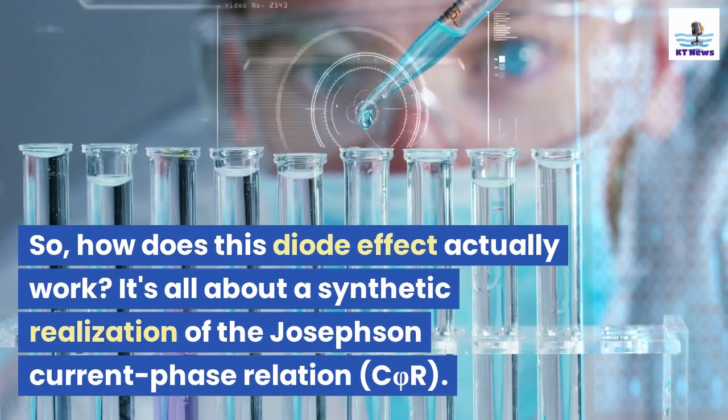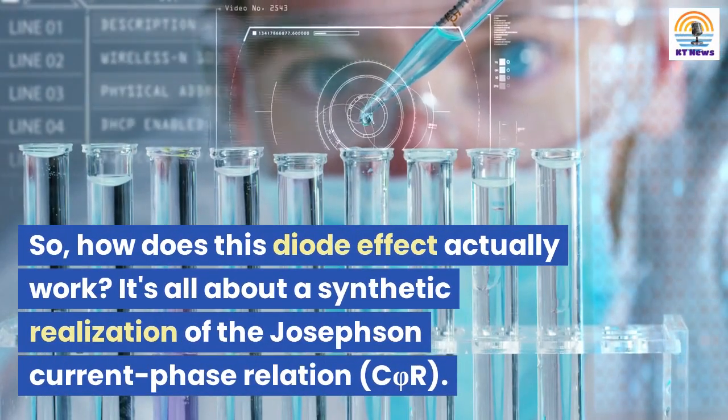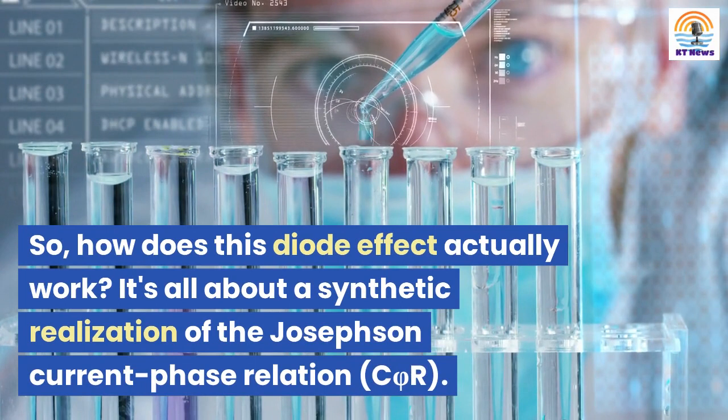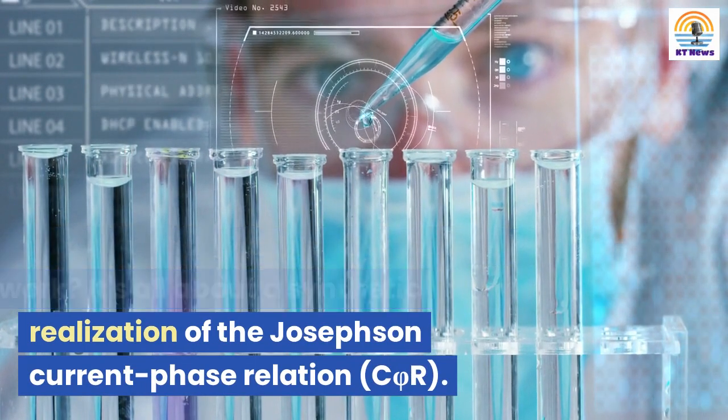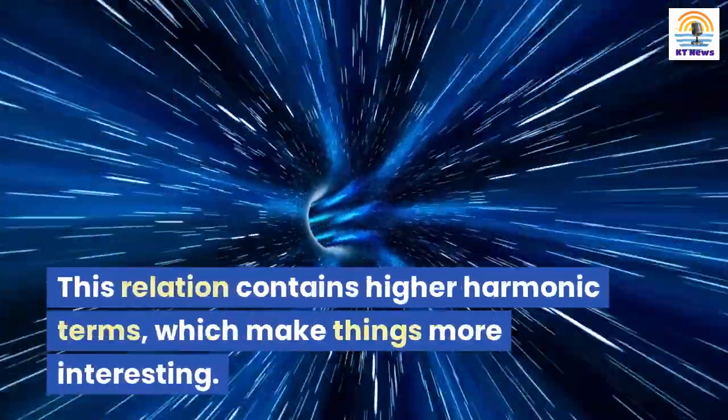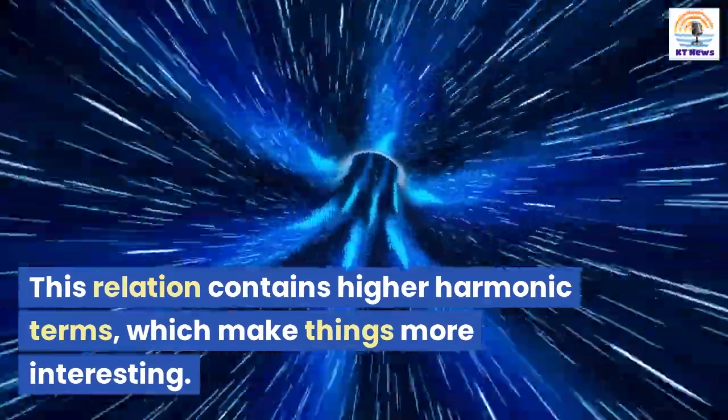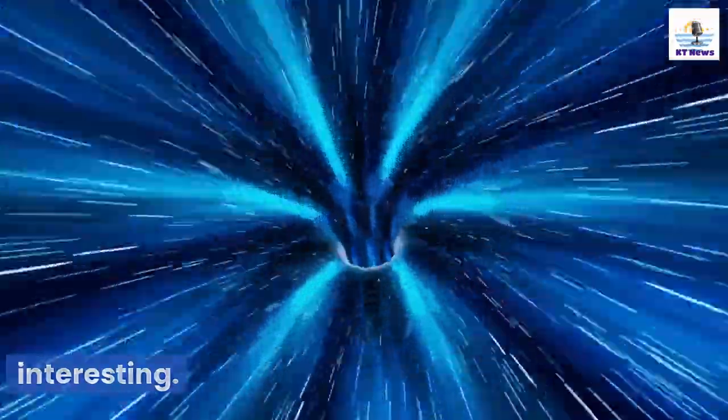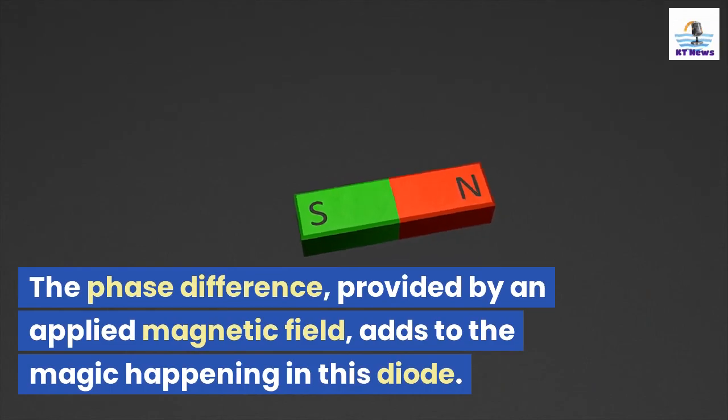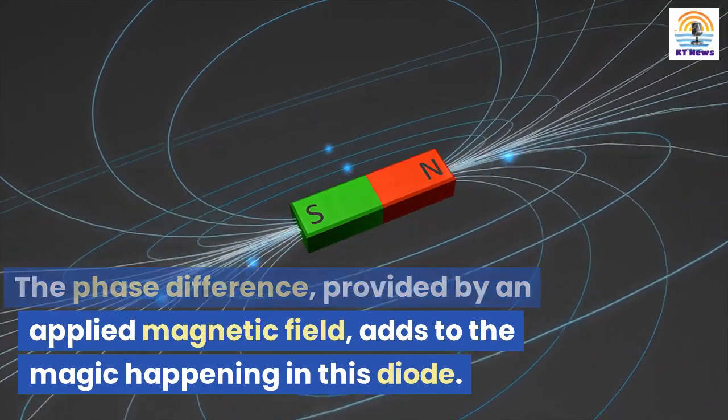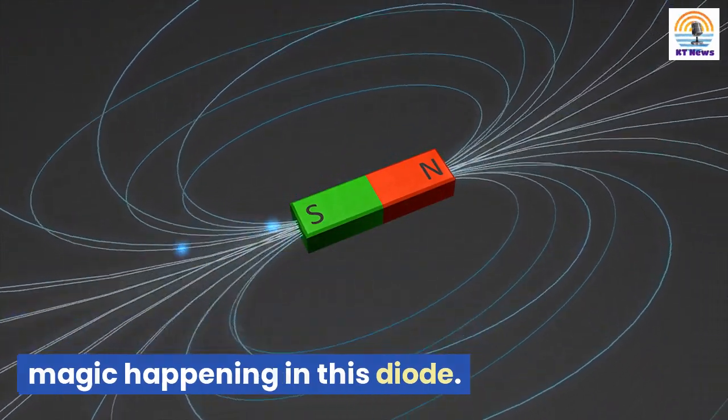So, how does this diode effect actually work? It's all about a synthetic realization of the Josephson current phase relation, CPR. This relation contains higher harmonic terms, which make things more interesting. The phase difference, provided by an applied magnetic field, adds to the magic happening in this diode.